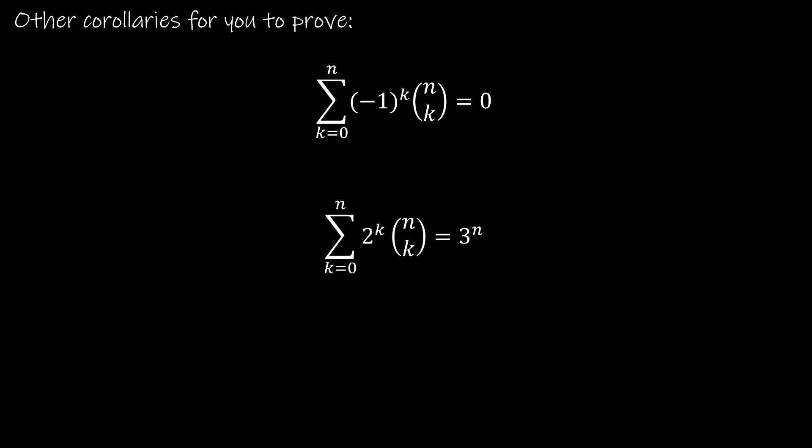In a similar way, we could prove these other corollaries. The summation as k goes from 0 to n of negative 1 to the k times n choose k equals 0 — you can rationalize that because you end up with negative 1 plus 1 repeatedly, which makes sense that you'd get 0. And the summation as k goes from 0 to n of 2 to the k times n choose k is going to give you 3 to the n. I'm leaving those for you to prove on your own. Up next, we're going to take a look at Pascal's identity and triangle.